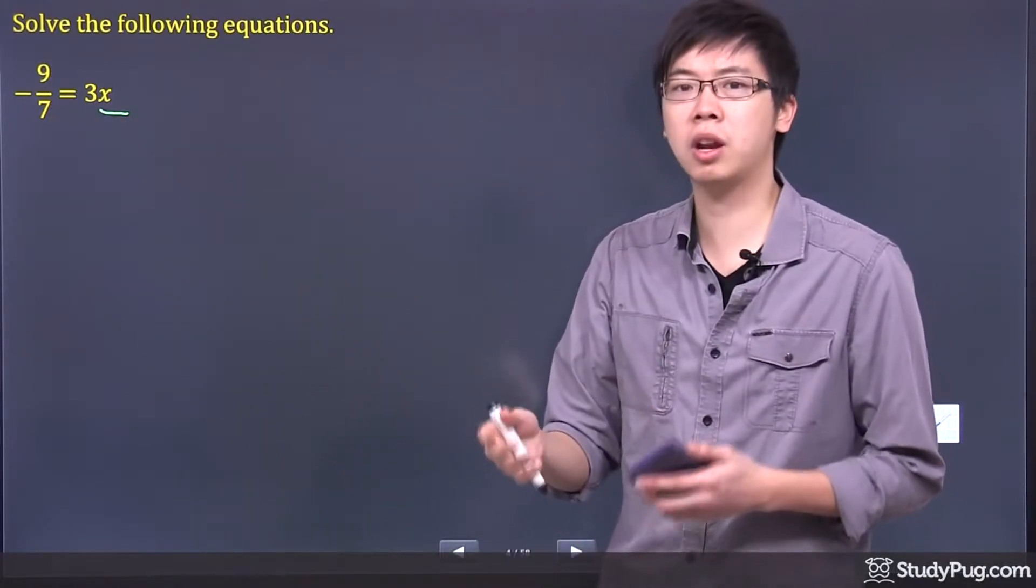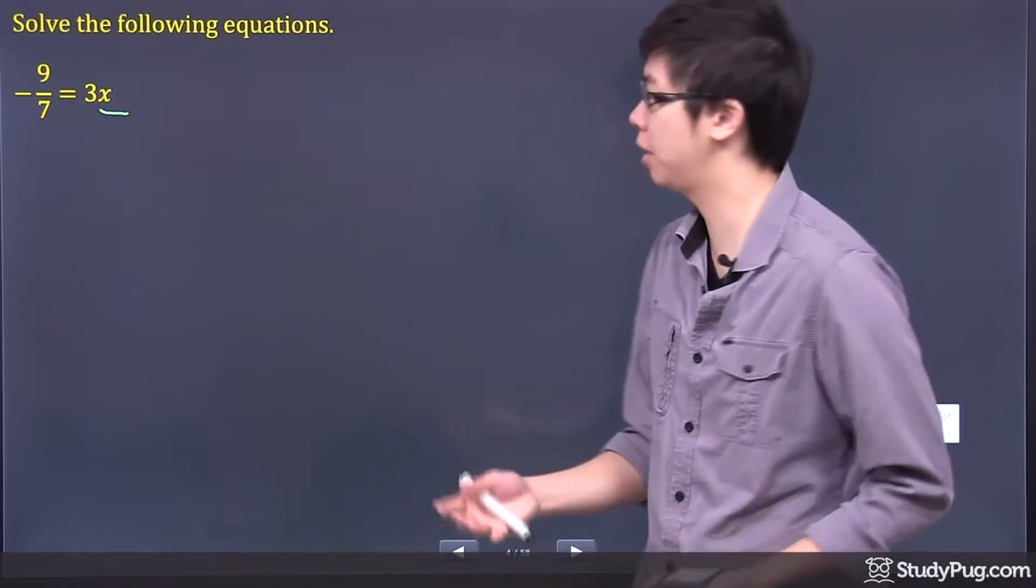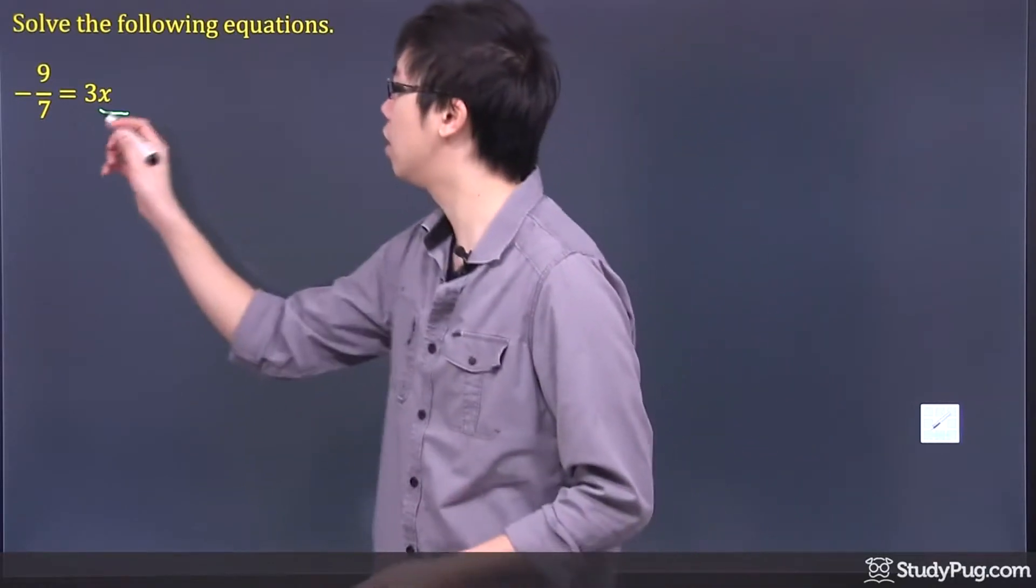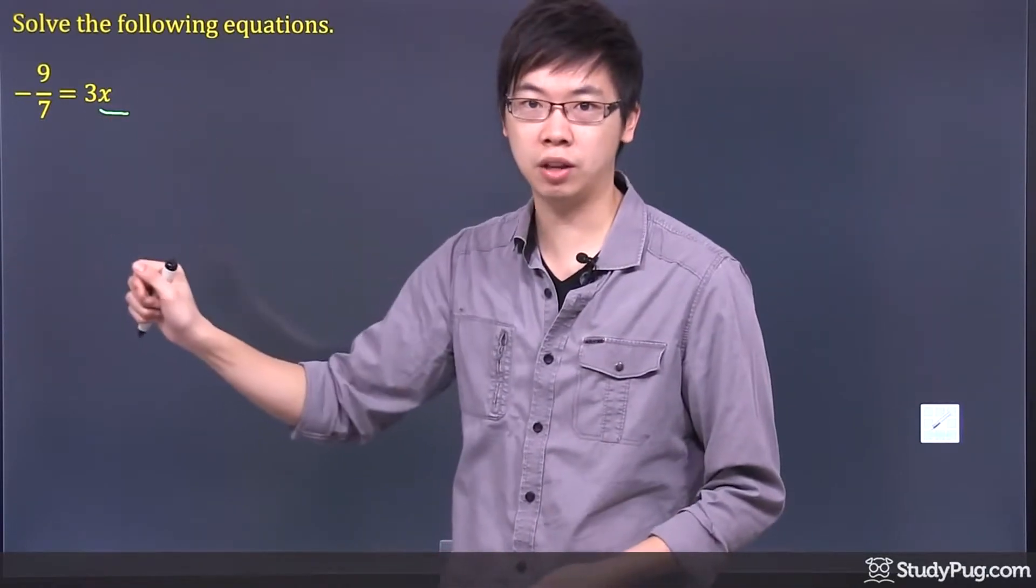So if you want to remove the 3, you're going to have to do something that's called the opposite. So what's the opposite of multiplying? It's dividing. So that means you have to divide the 3 away from the x.